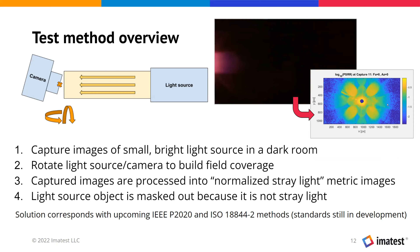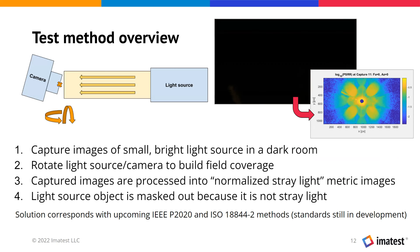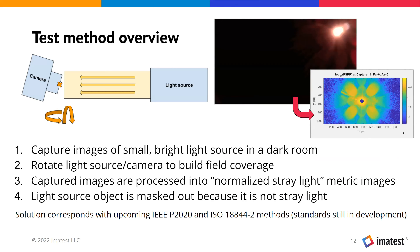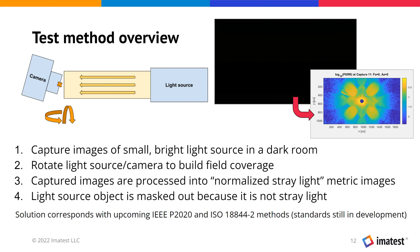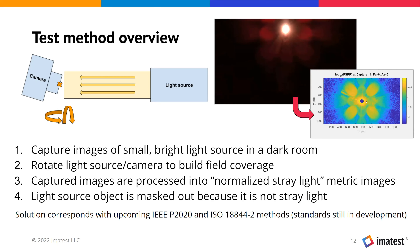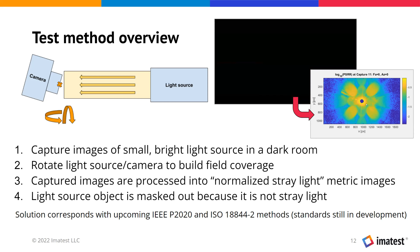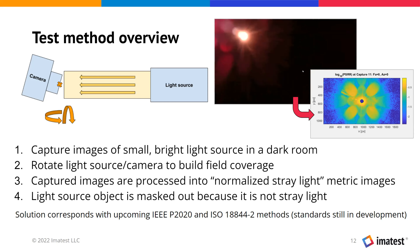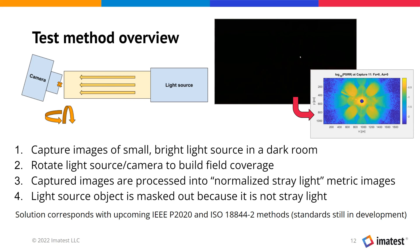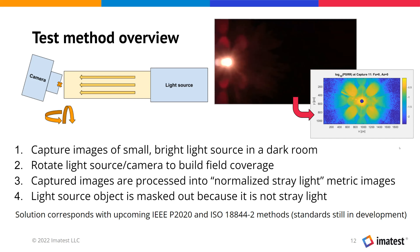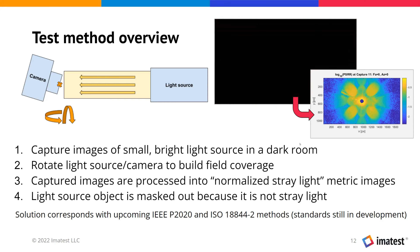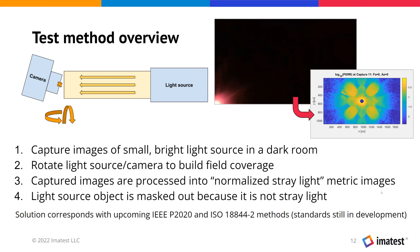In these metric images, you mask out the light source object itself — the main projection — because ideally that's all the camera should see. If you're pointing your camera at the sun, ideally you should just see a circle that is the sun. But in effect you'll see a lot of blooming and glare, and that's what we're trying to measure here. This method of stray light testing is meant to correspond with the upcoming standard IEEE P2020.